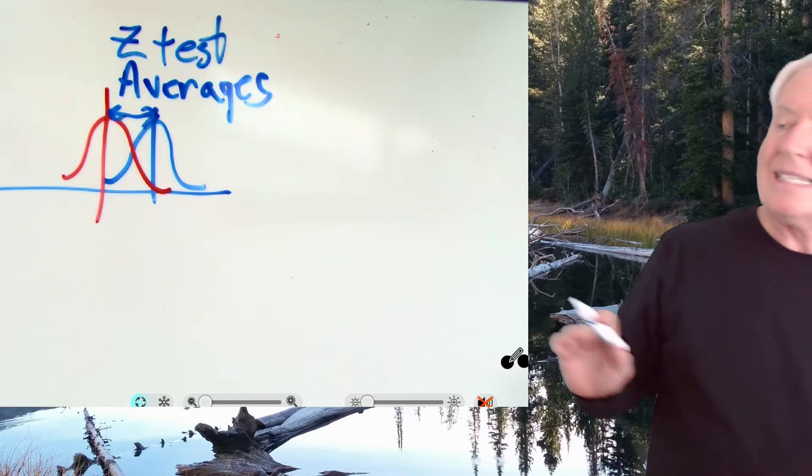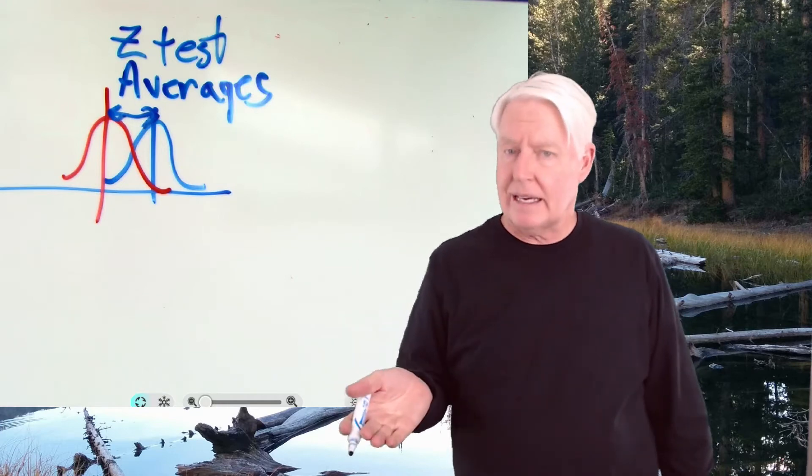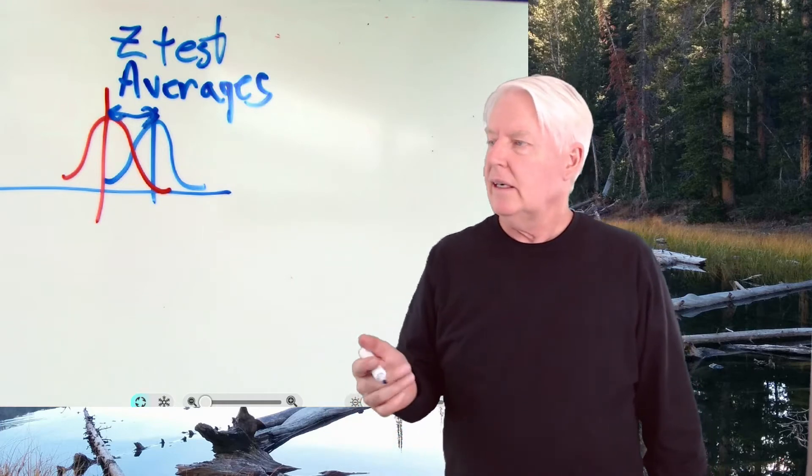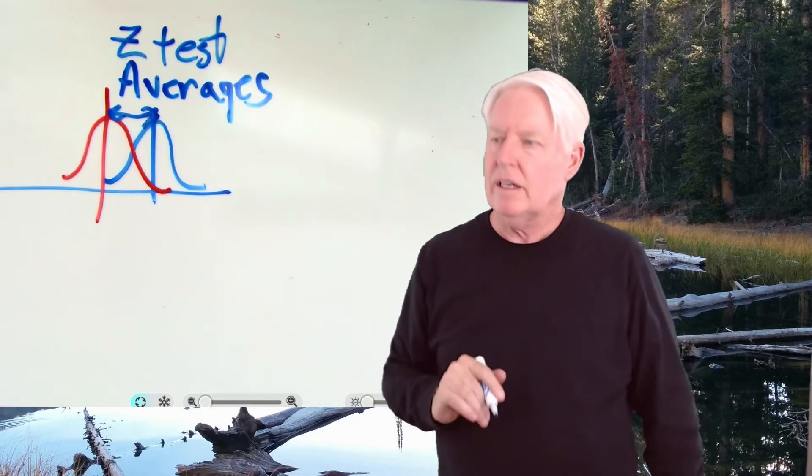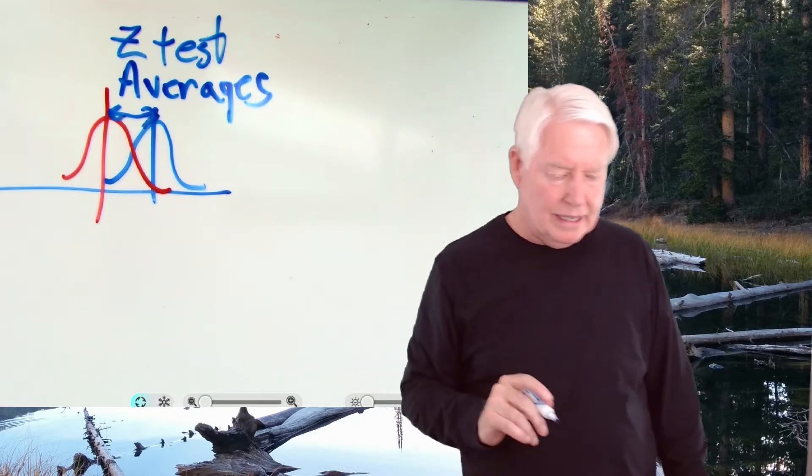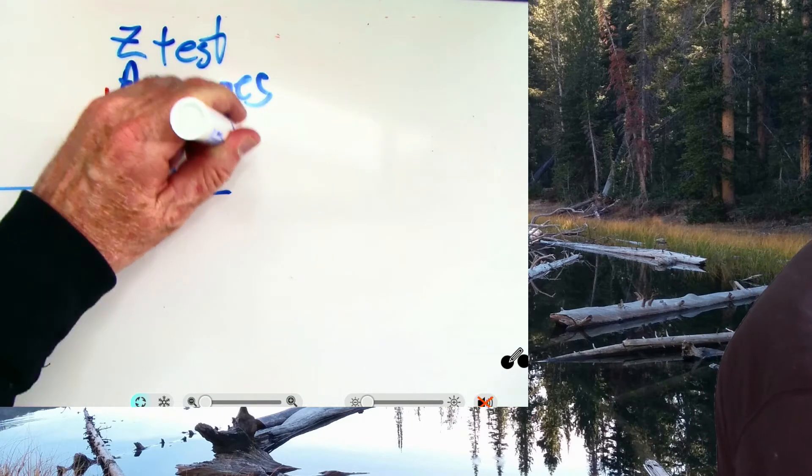And it does not take into account sampling error. That's what makes the Z test unique. It does not take into account sampling error. And you can ignore sampling error if your sample sizes are large enough. So what's that key sample size? The key sample size is this.